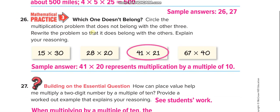Circle the multiplication problem that does not belong with the other 3. Rewrite the problem so that it does belong with the others. In all of them, we have 0's at the 1's. But in this 1, we have 1 at the 1's place. So you can rewrite it like this. 41 times 20.